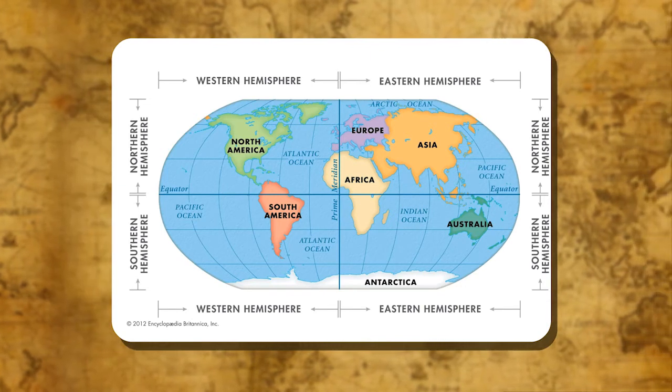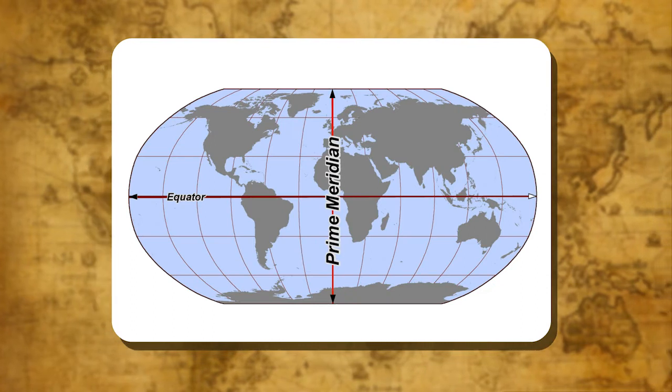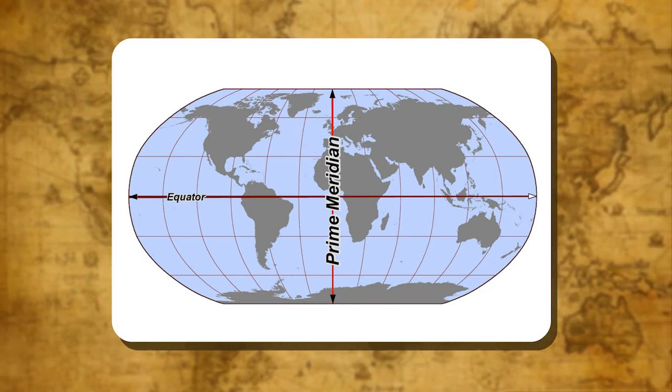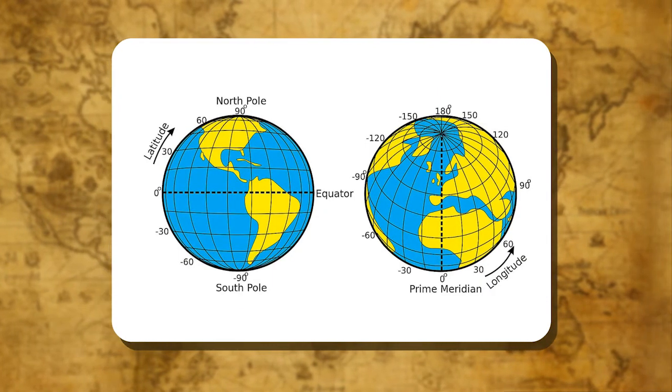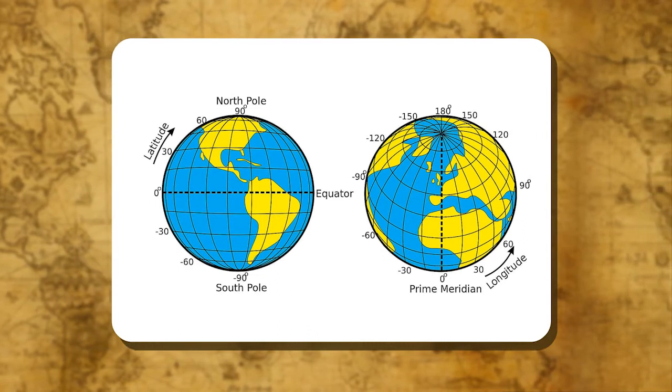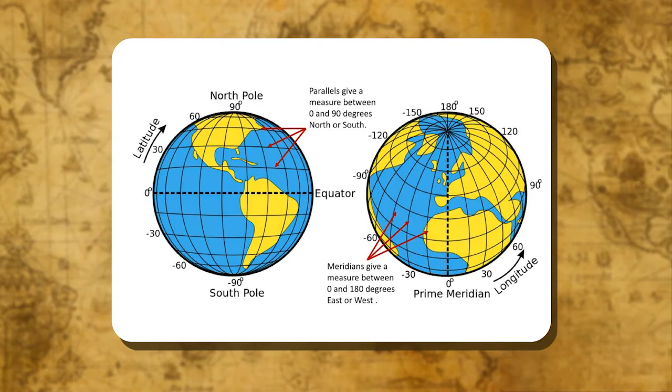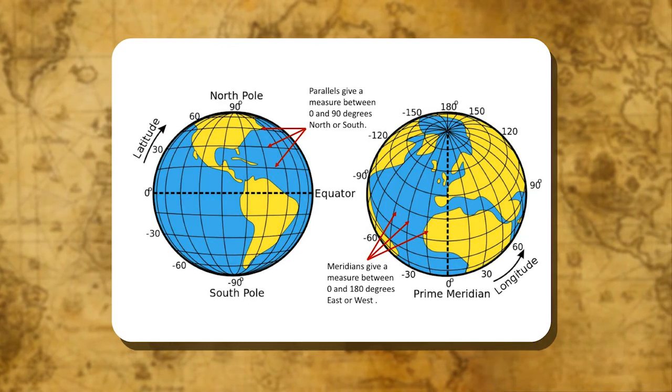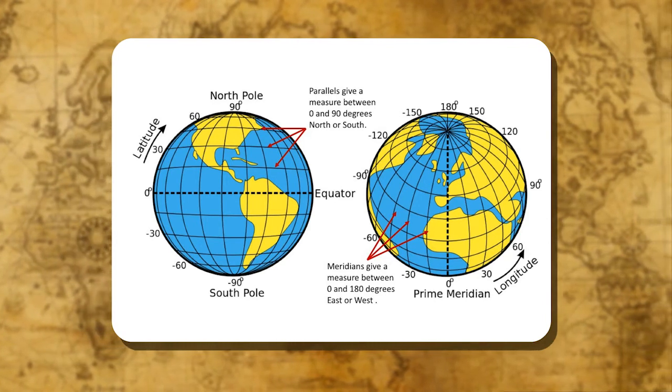The word meridian means midday. A meridian is a line joining places which have their noon at the same time. The longitude of a place can therefore be defined as the distance of that place east or west of the meridian of Greenwich, measured at an angle.